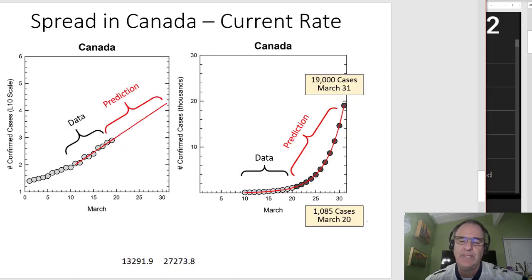So we take that information and we fit a line to the recent growth because we think that's most relevant. We would predict that at the end of March in 10 days that we would have something like 19,000 cases. We have 1,085 as of when I looked on the web before starting this.